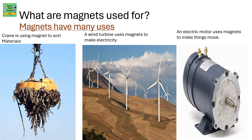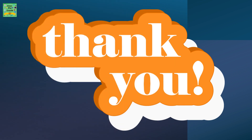Magnets have many uses. A crane uses magnets to sort materials. A wind turbine uses magnets to make electricity. An electric motor uses magnets to make things move.